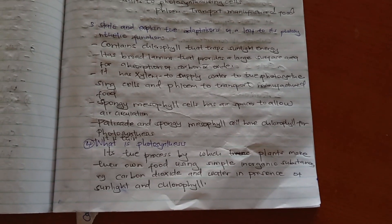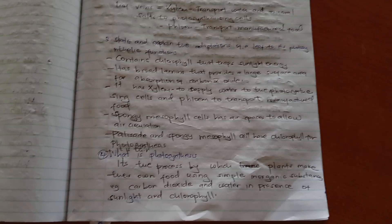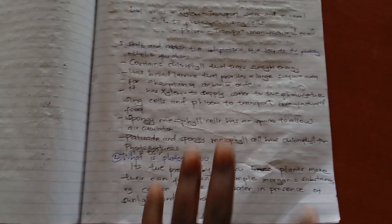What is photosynthesis? It's the process by which plants make their own food by use of simple inorganic substances, such as carbon dioxide and water, in the presence of sunlight and chlorophyll.